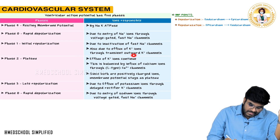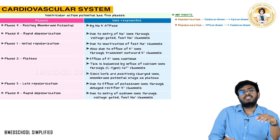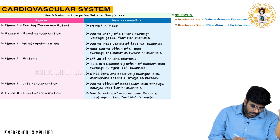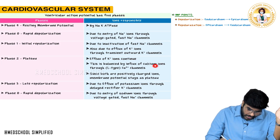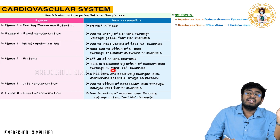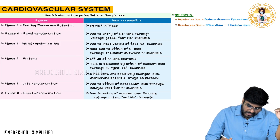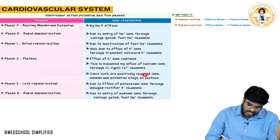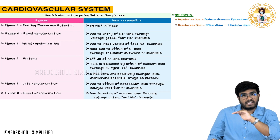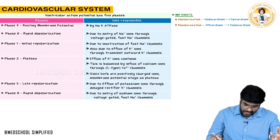In phase two — the plateau — potassium ions are going out, and at the same time calcium ions are coming into the cell via L-type calcium channels. Positivity is going out and positivity is coming in. Since both potassium and calcium are positively charged ions, the membrane potential stays at plateau.